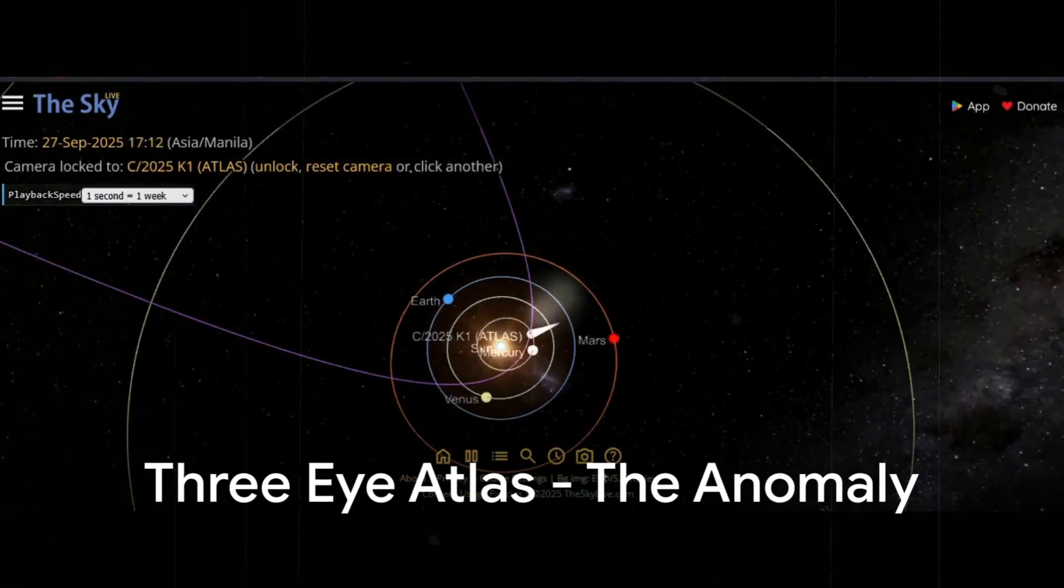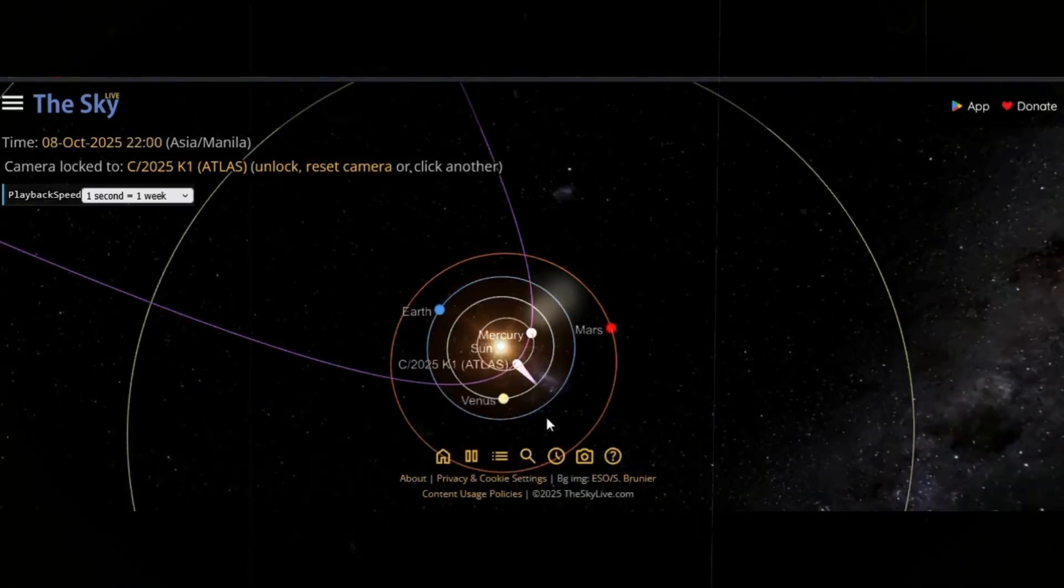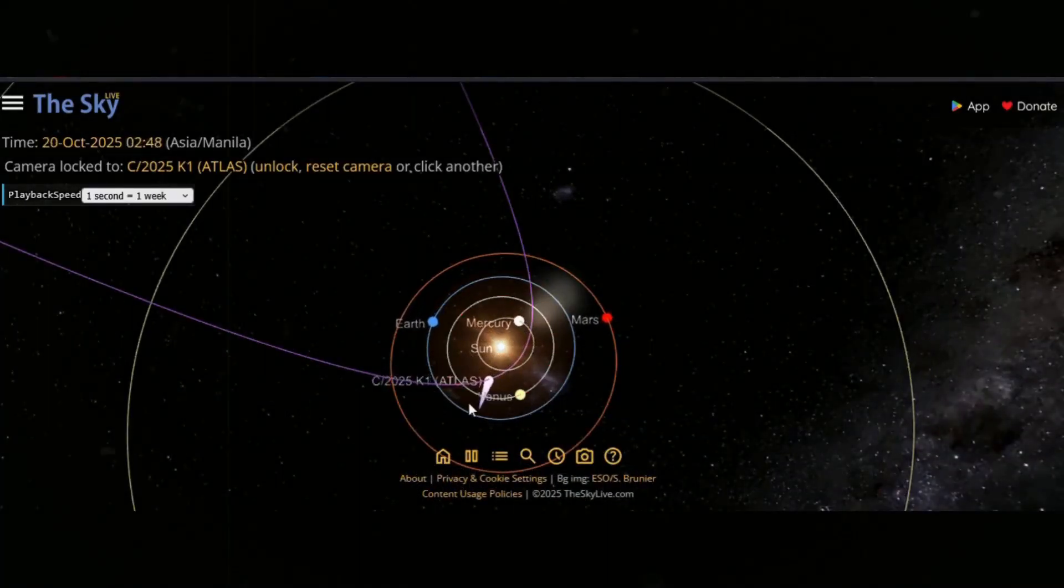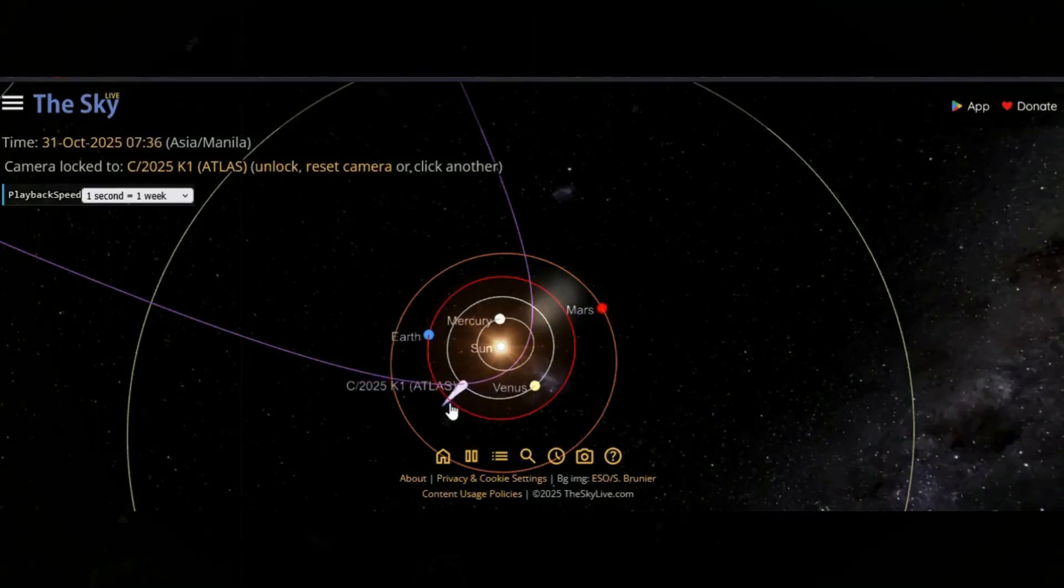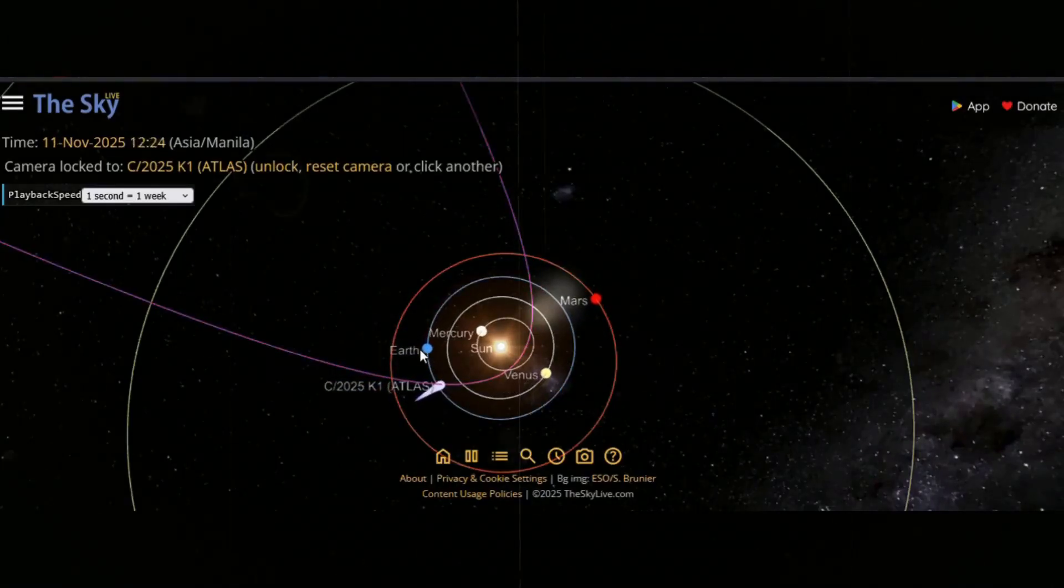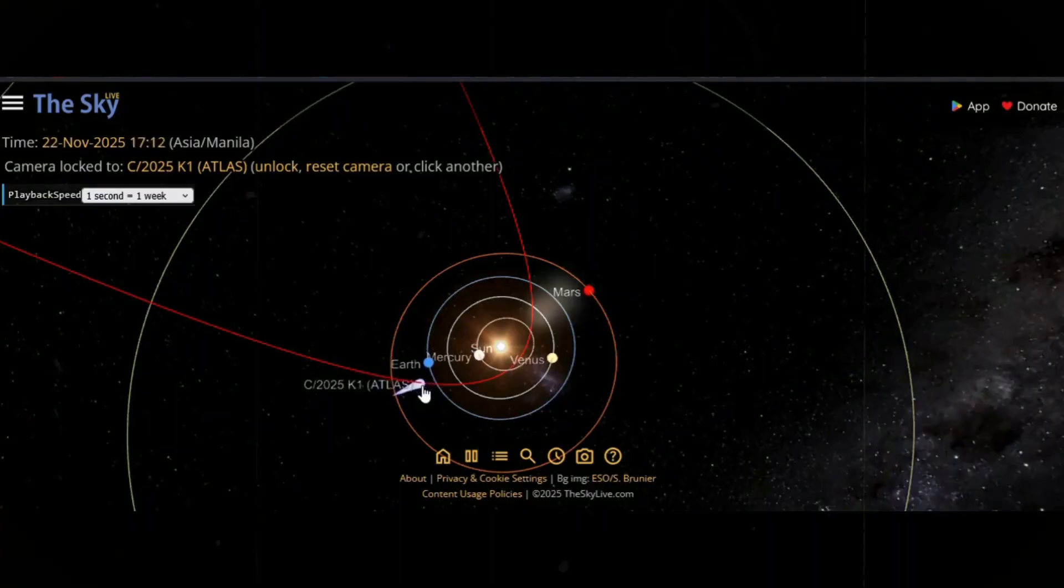Within this influx, one body refuses to behave as expected. Catalogued as 3i Atlas, it drifts forward like a phantom, its aura far larger than its solid heart.